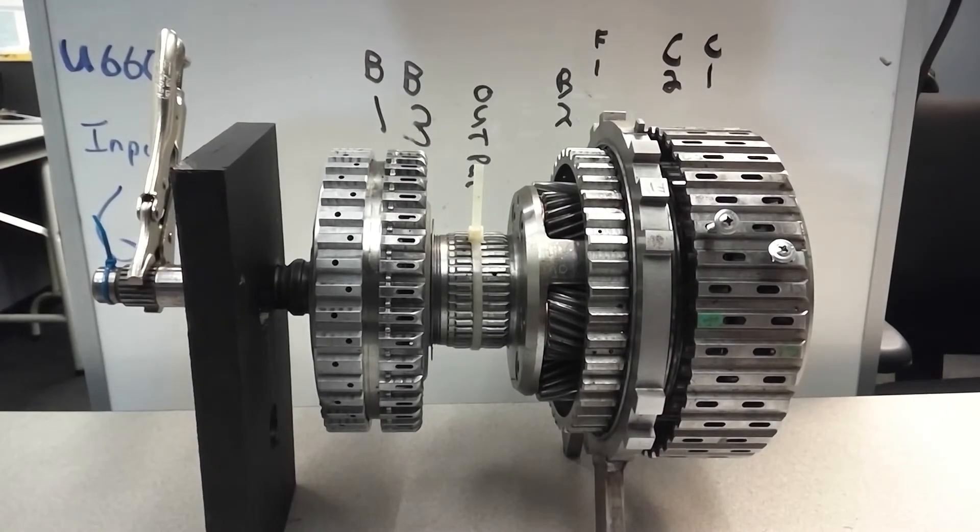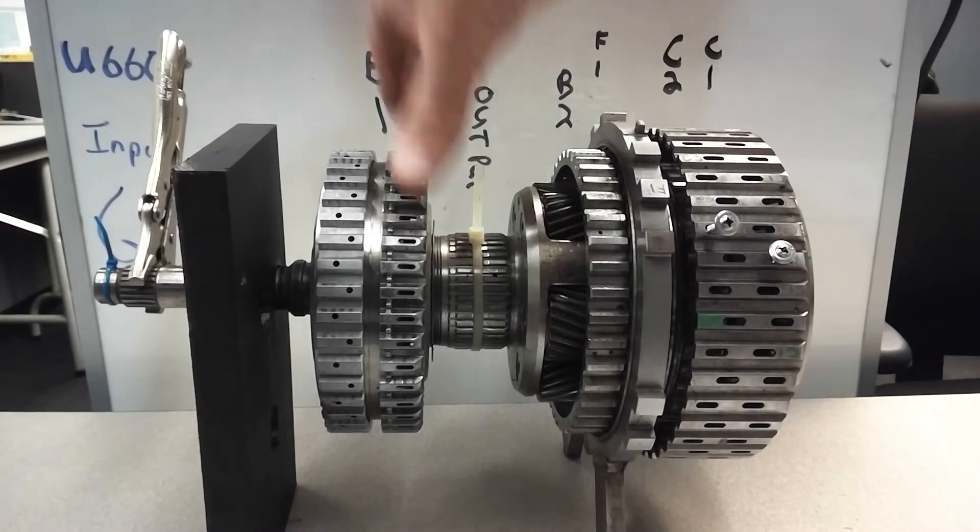We've got 3rd gear. Gear ratio is 1.4 to 1. And C1 comes on and B3 comes on. B3 lives here.